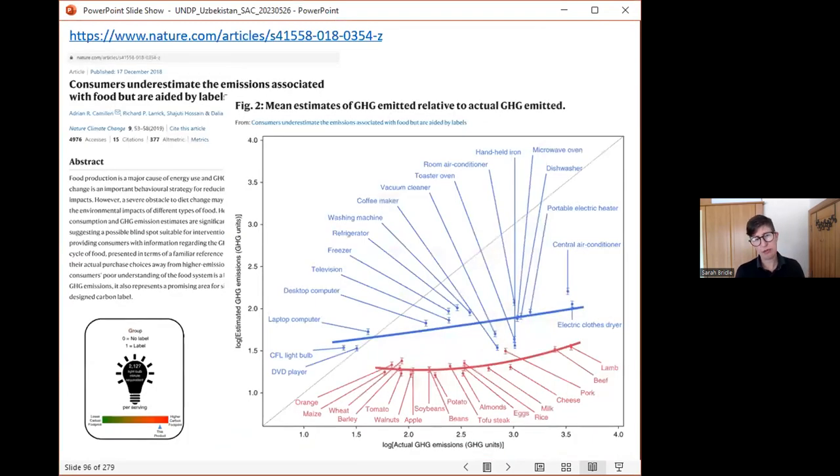This is interesting research which shows that people often will get the correct order. They might know that the steak causes more greenhouse gas emissions than the beans, but they'll be very wrong in the size of the difference. People tend to underestimate the size of the differences between different causes of climate change.